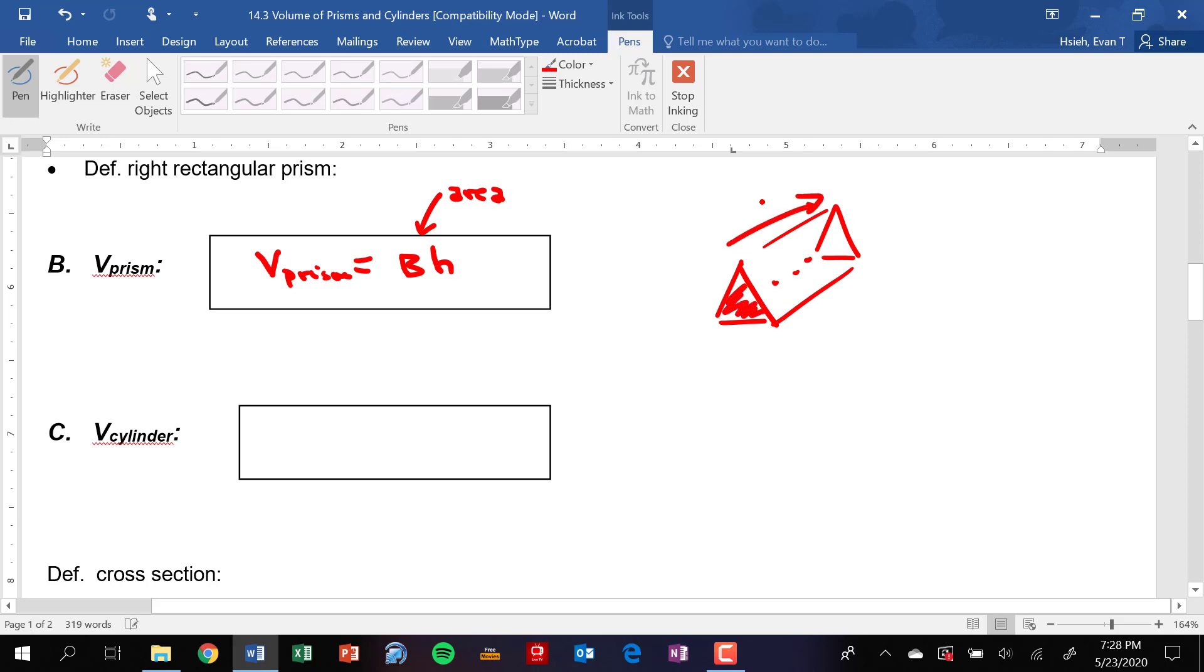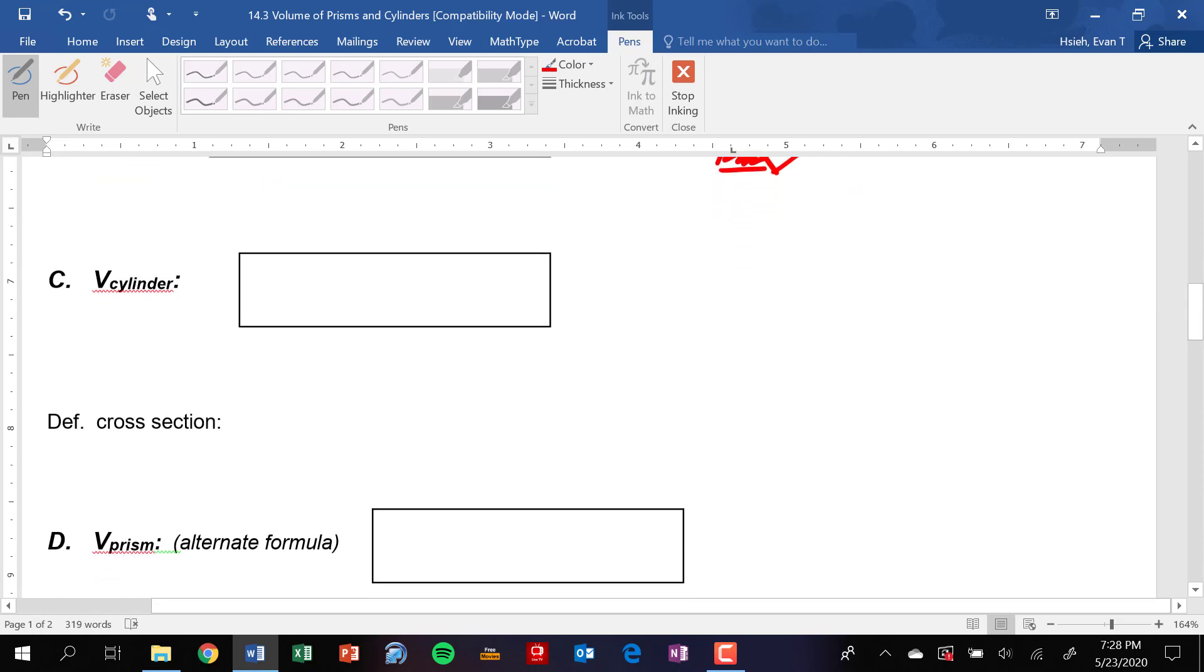Likewise, the volume of a cylinder is also just going to be the base times the height. Or in the case of a cylinder, we know that the bases are circles, and so it's just going to be pi r squared, which is the area of the base, and then times the height.